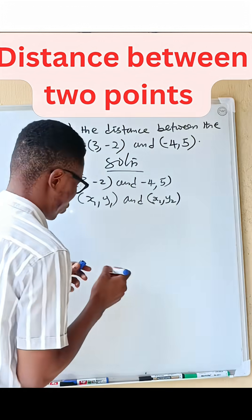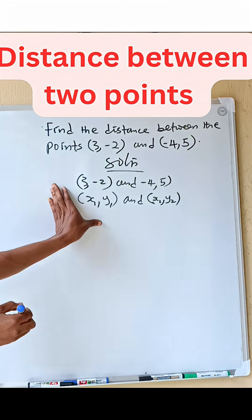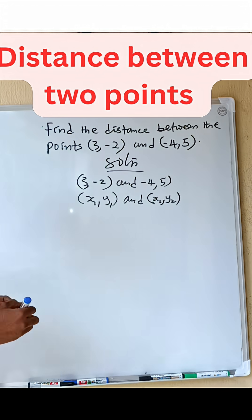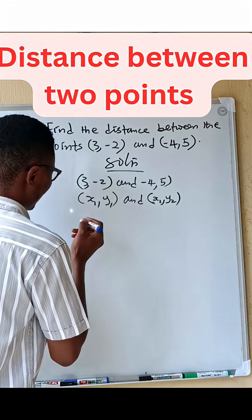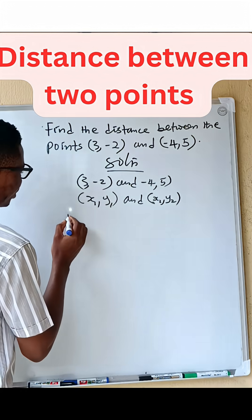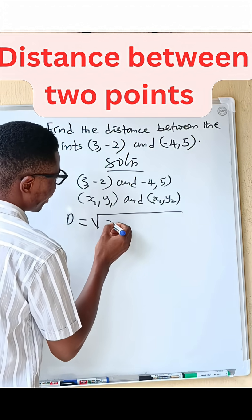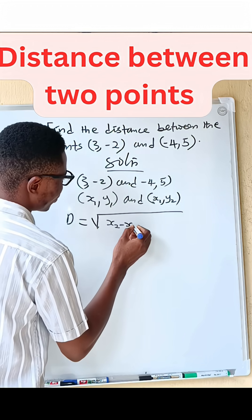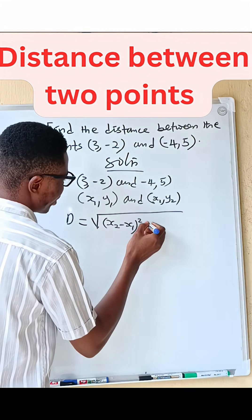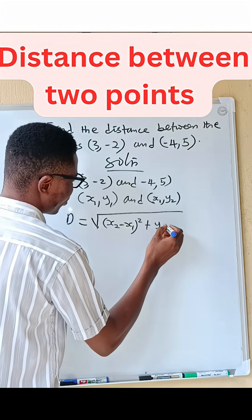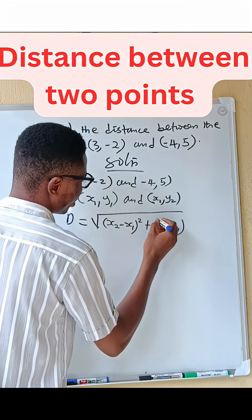So the formula for finding the distance between two points is given as: D equals square root of (x2 minus x1) all squared plus (y2 minus y1) all squared.